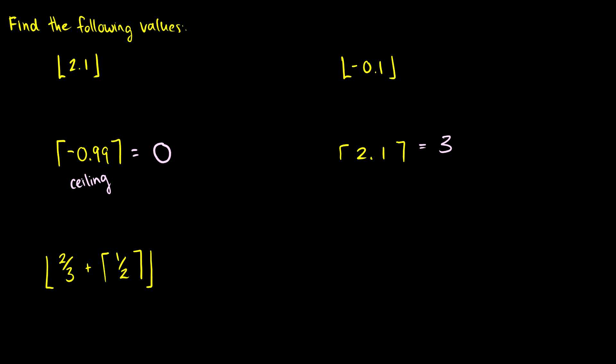So what about the floor function? The floor takes a real number and rounds it down. So the floor of 2.1 is just going to be 2. And the floor of negative 0.1 is going to take negative 0.1, round it down, so that will end up at negative 1.